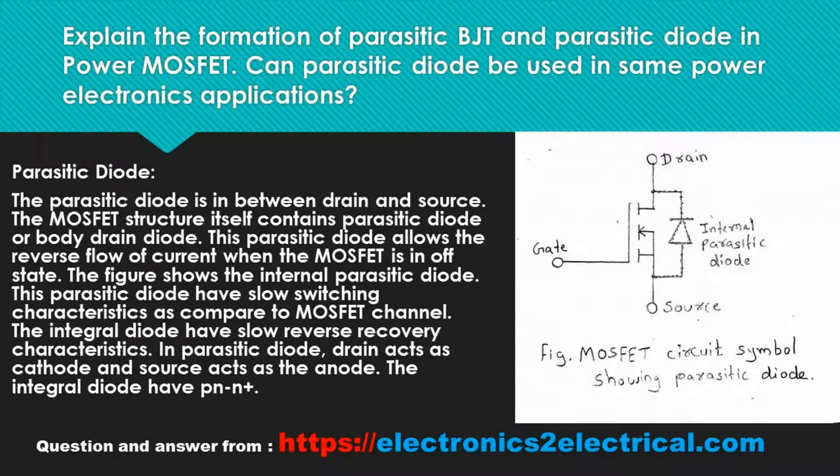The parasitic diode is located between the drain and source. The MOSFET structure itself contains a parasitic diode, also called the body-drain diode. This parasitic diode allows the reverse flow of current when the MOSFET is in the off state. The figure shows the internal parasitic diode.